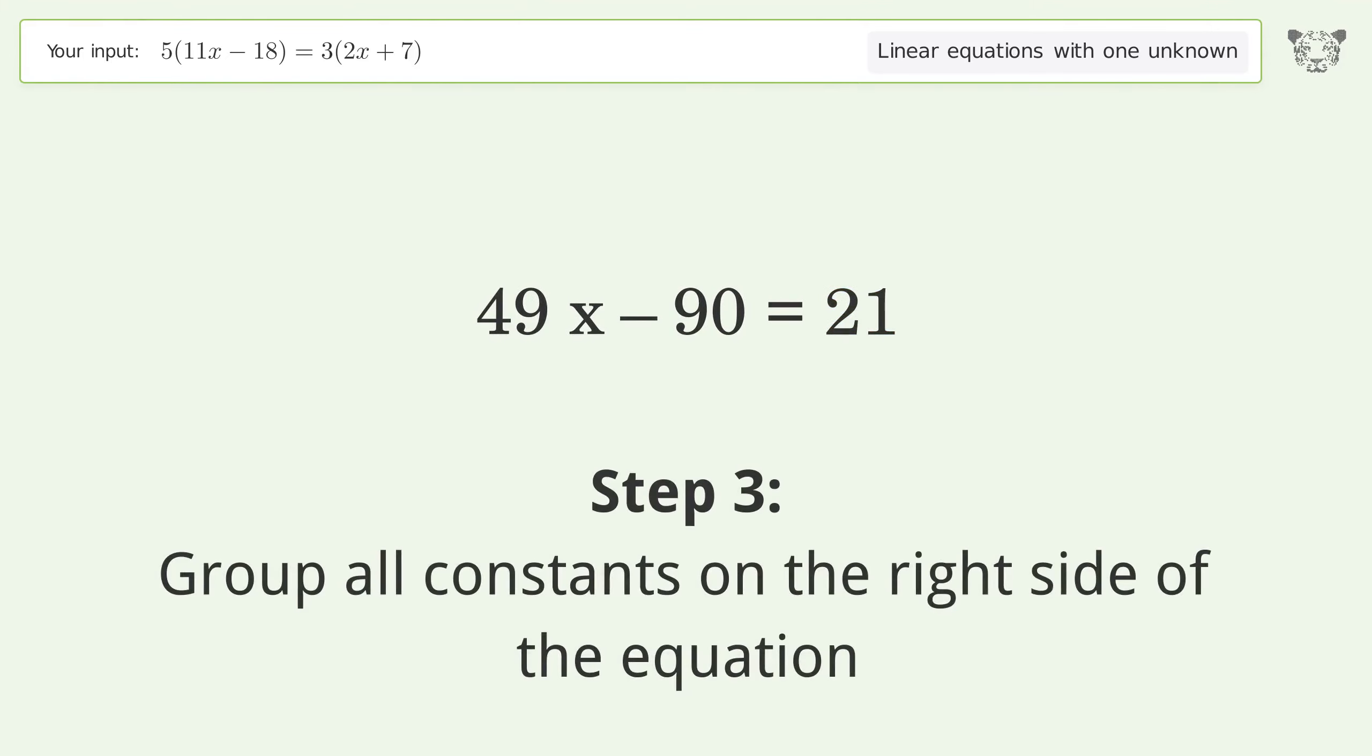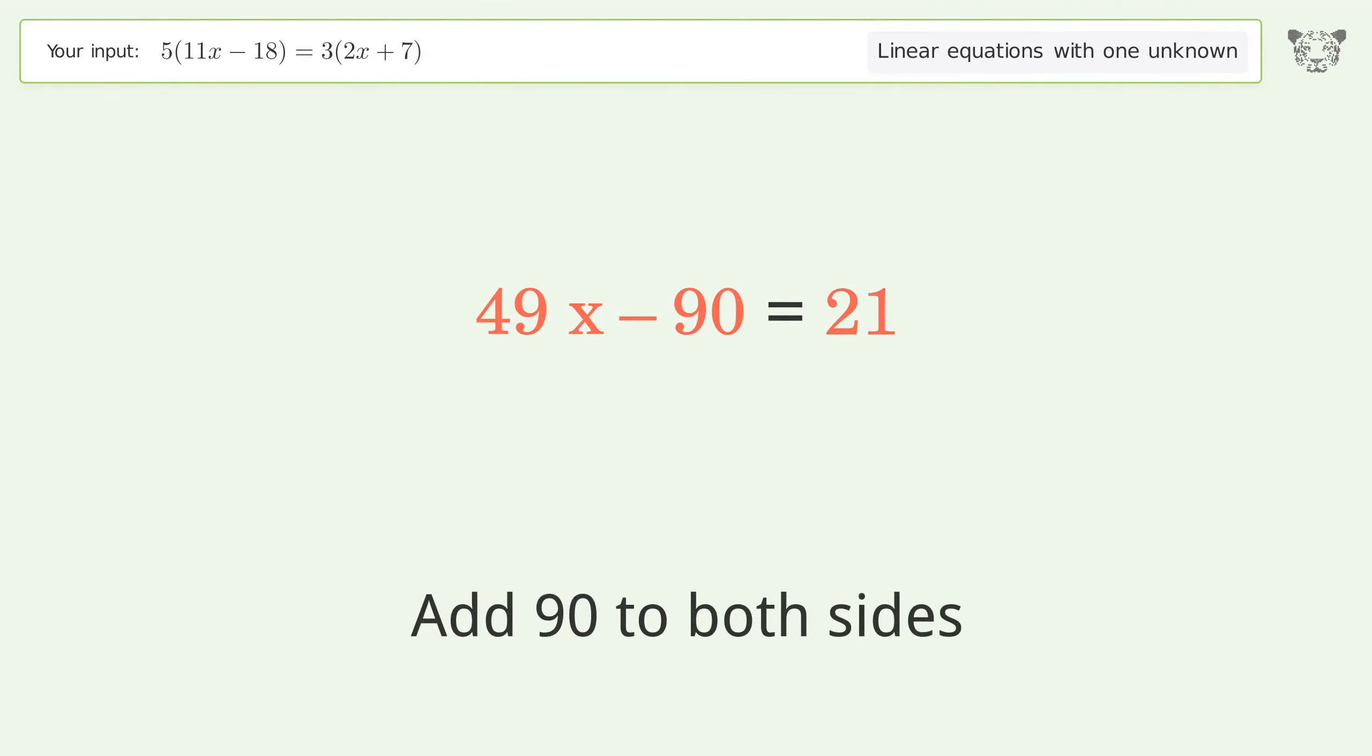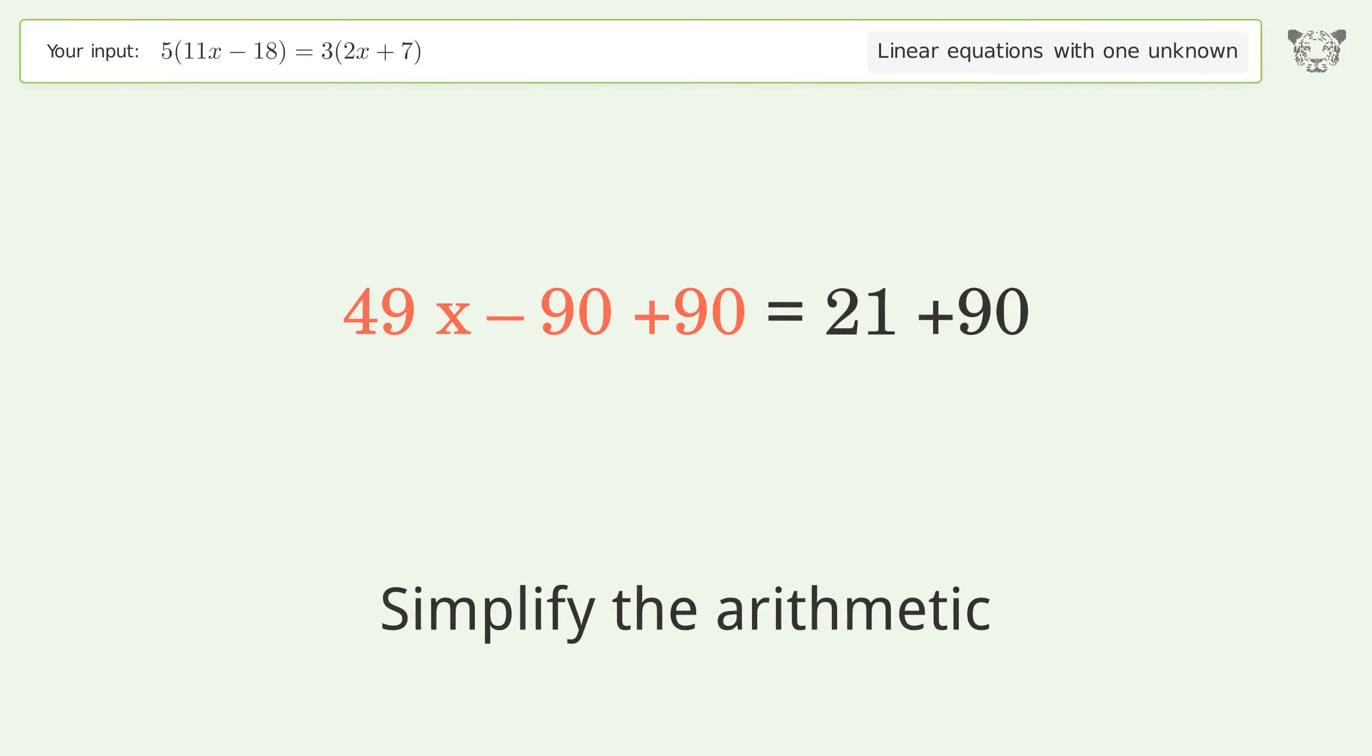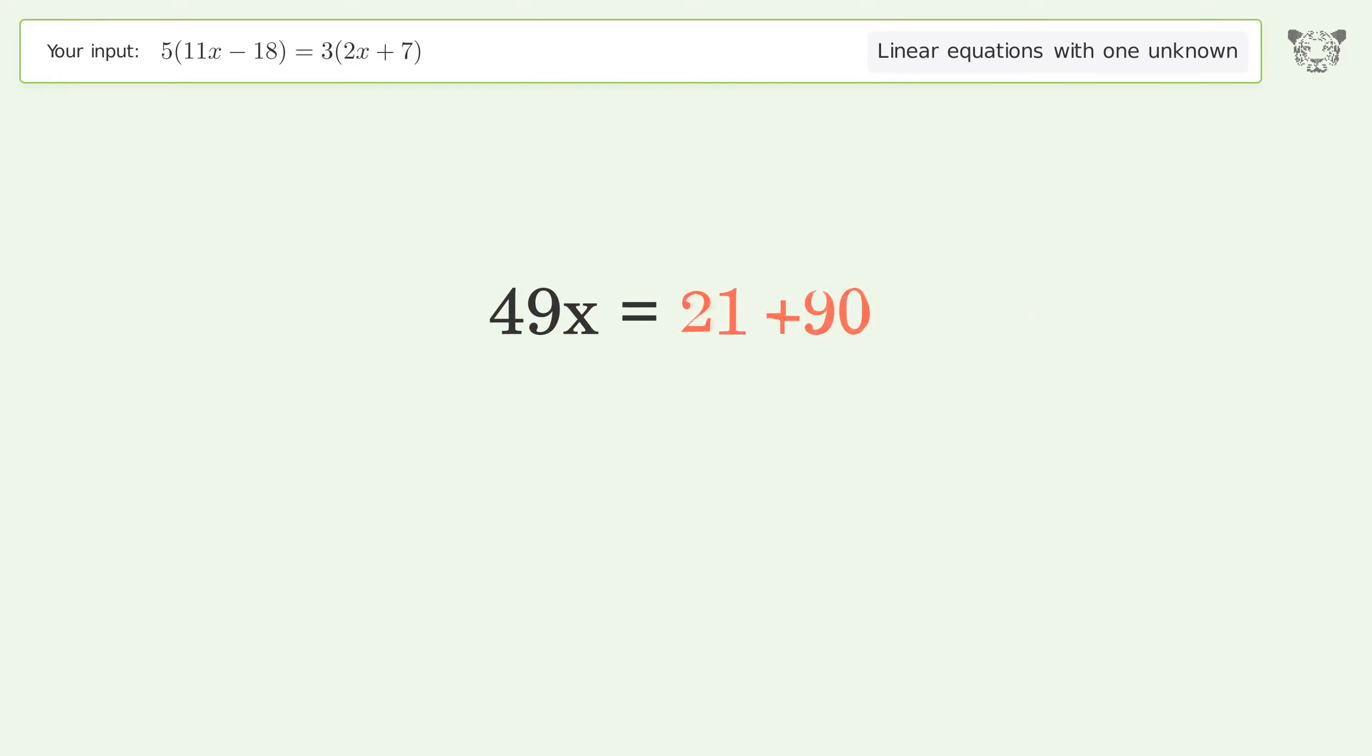Group all constants on the right side of the equation. Add 90 to both sides. Simplify the arithmetic. Group like terms on the right side of the equation.